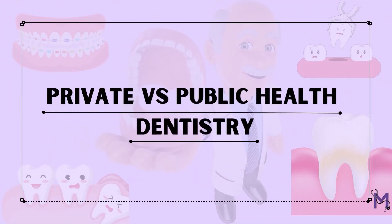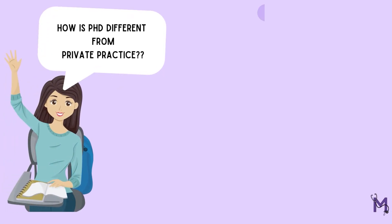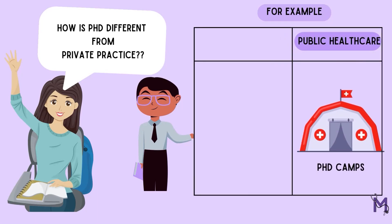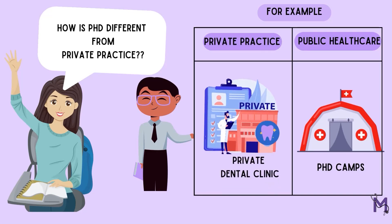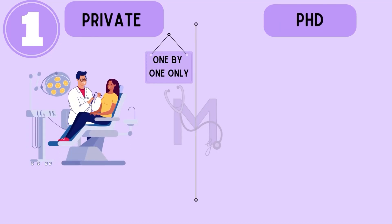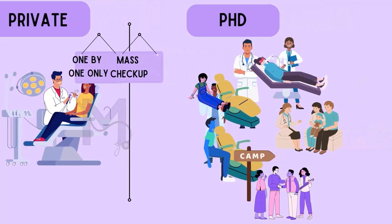We've talked about public health dentistry in the earlier videos, and I'm sure you have concerns regarding how this differs from a private practice. For better comprehension, consider your PhD camps as an example of public health care and private dentistry clinics as an example of private practice. Firstly, in clinics, the dentist usually deals with one patient at a time, while in camps, the healthcare professional deals with an entire population, as they consider a disease to be a mass phenomenon.